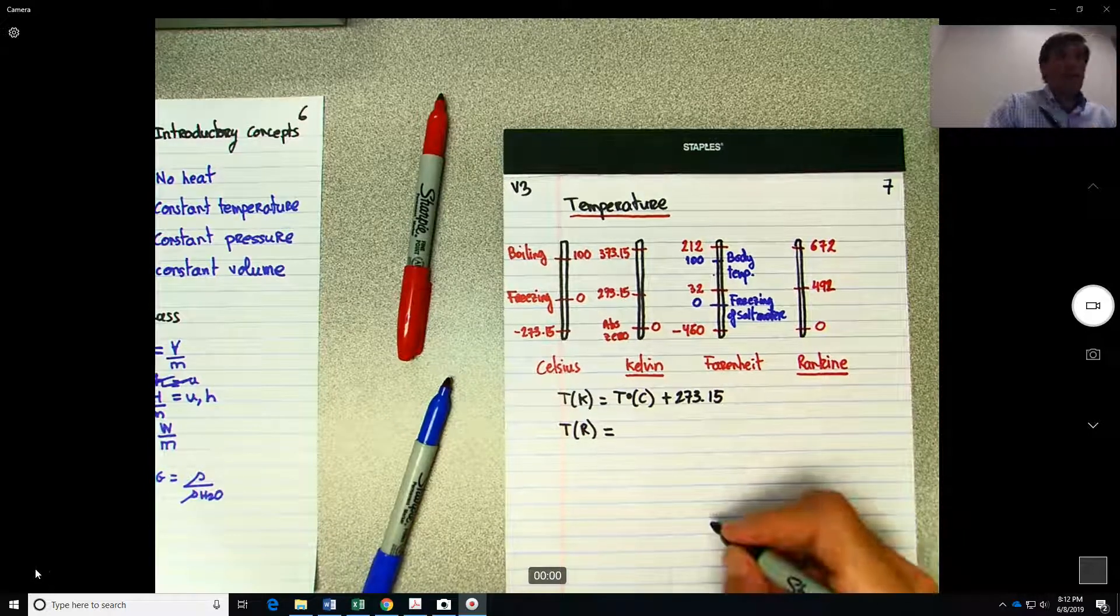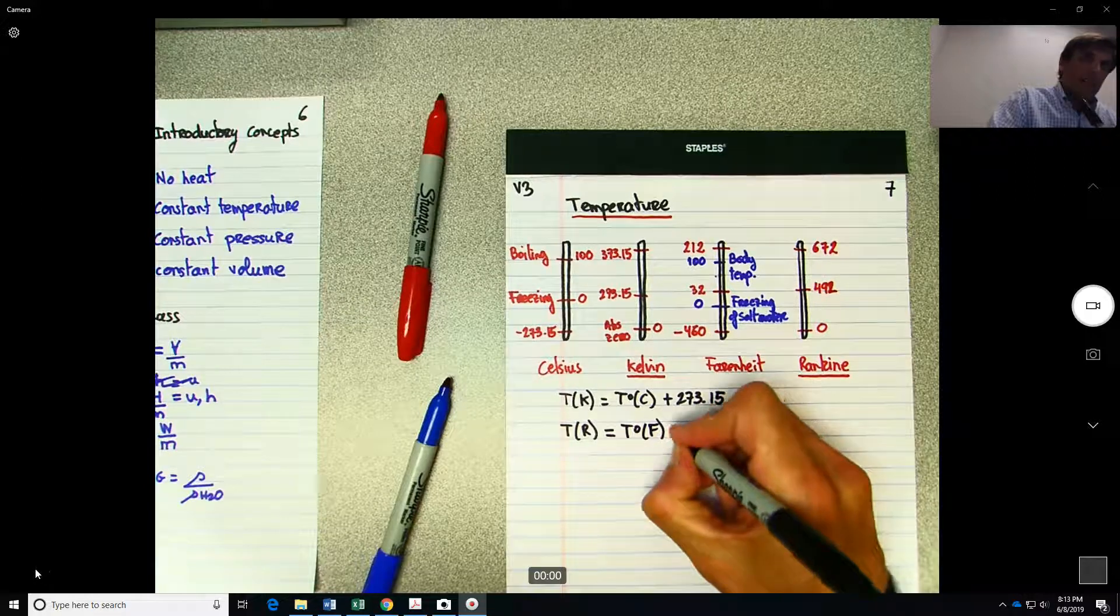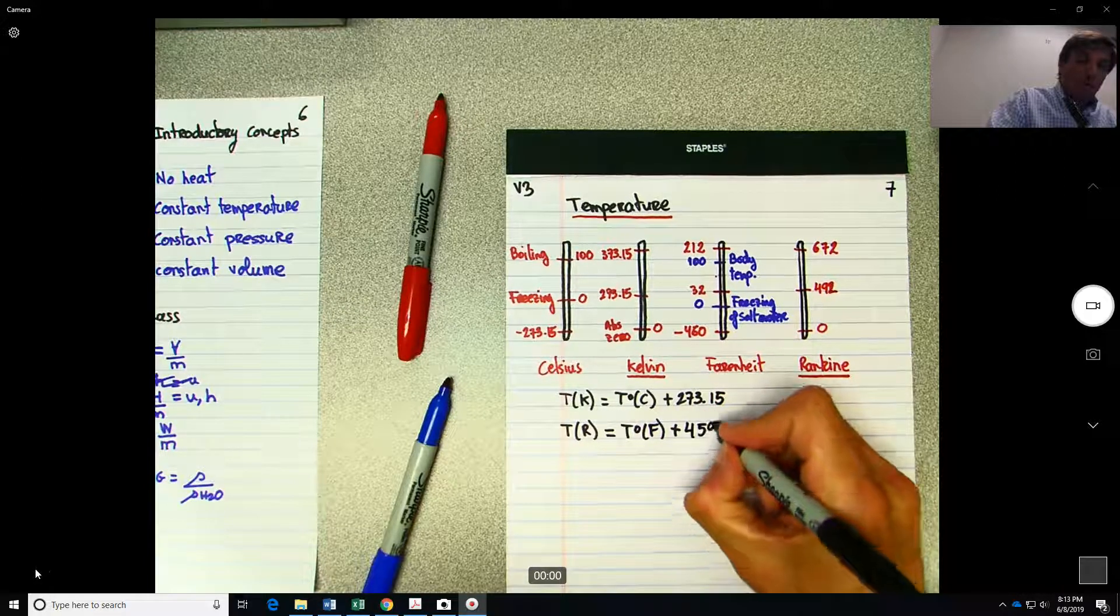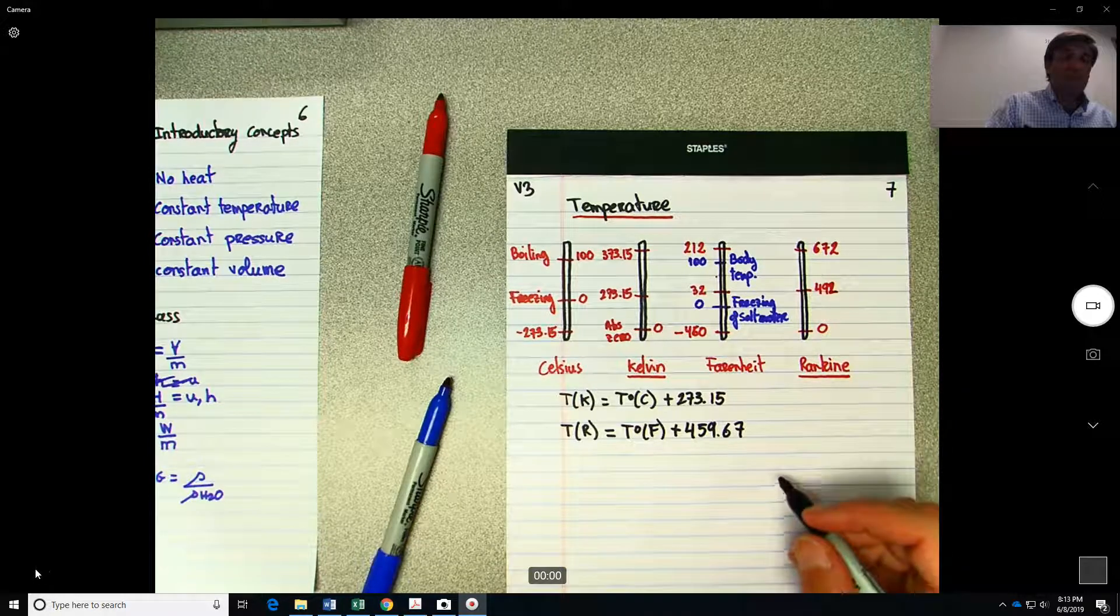If you want your temperature in Rankine, you're going to have your temperature in Fahrenheit and you're going to add 459.67. But generally I round off this by 460, personally.